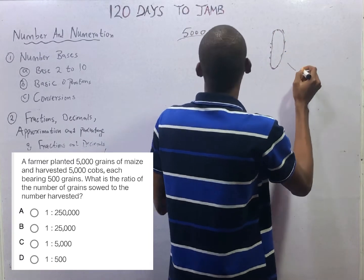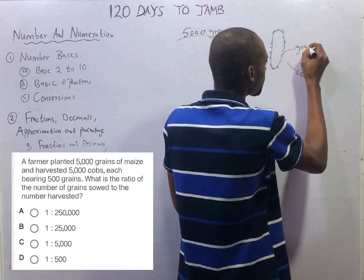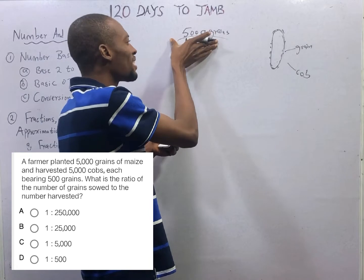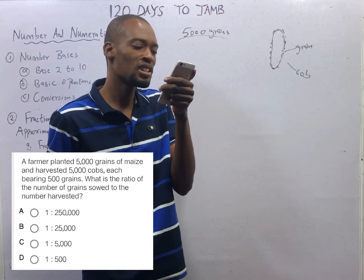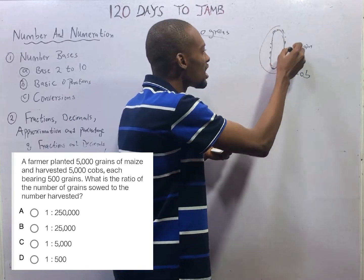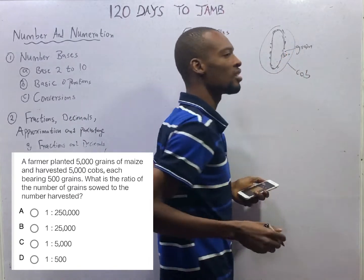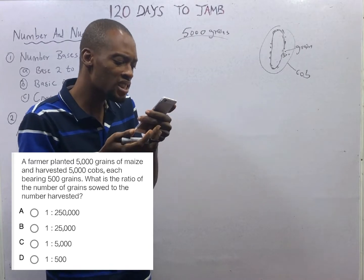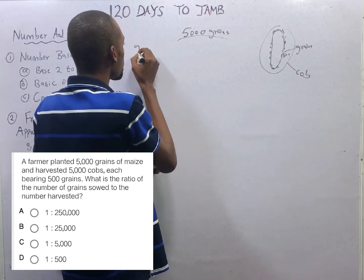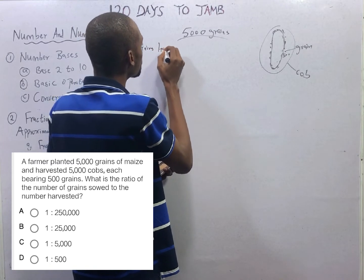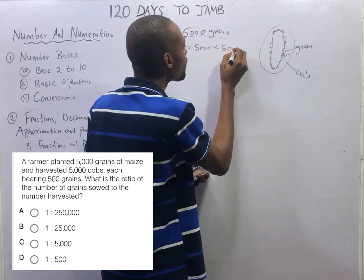So the farmer planted 5,000 grains — each of these dots represents one grain. At the end, he harvested 5,000 cobs, and each of those cobs had 500 grains. So if you are converting the cobs to grains, you simply multiply by how many grains are in each cob. The total grains harvested equals 5,000 cobs times 500 grains per cob.